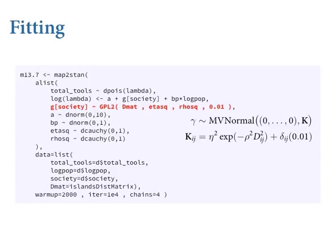The 0.01 for sigma squared doesn't affect the likelihood at all, so why include it? Because it's part of the definition of the function — the function allows you to have a parameter there. When you fix it to a value, it goes into the definition but never affects the likelihood because there are never two observations from the same island. If you leave it off, you'll get an error because that function expects four arguments. It's very common for people to define this process this way and then fix the jigger part to some constant.